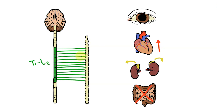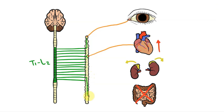So the preganglionic fibres will do one of three things upon entering the chain. Sometimes, as we saw in our drawing, they'll synapse with postganglionic fibres at the same spinal level. Other times they'll travel up the chain to synapse at a higher spinal level, and this is particularly important for innervating structures above the level of T1. Or they may enter the chain and travel down to synapse at a lower spinal level, which is really important for reaching structures below L2.